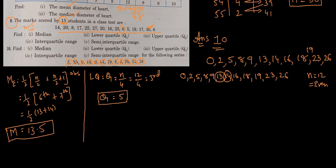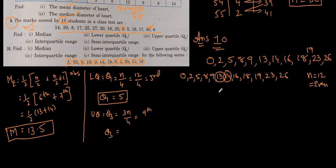For the upper quartile, that is Q3, the formula is 3n/4 = 3×12/4 = 9th observation. Counting: 1, 2, 3, 4, 5, 6, 7, 8, 9 — the 9th observation is 18. So Q3 = 18.